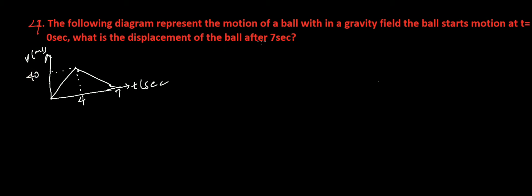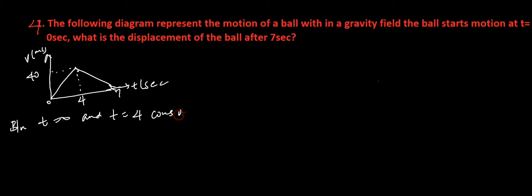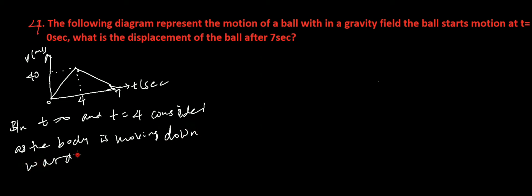What is the displacement of the ball after seven seconds? There is a force of gravity. Between t equals zero and t equals four seconds, let's consider the body is moving downward.